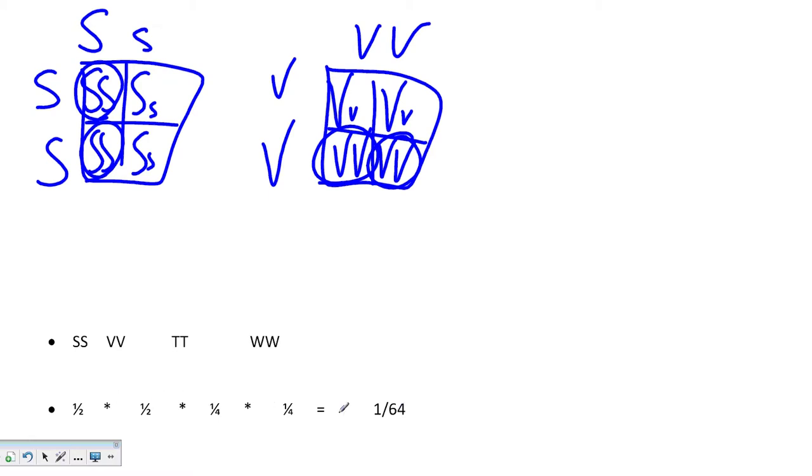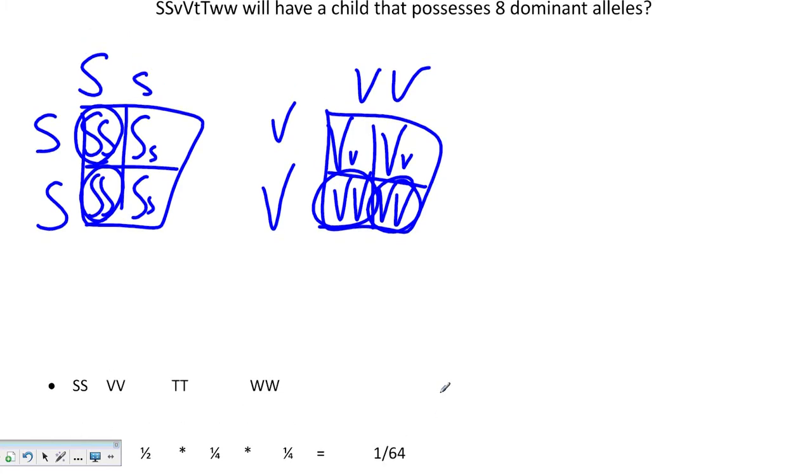Multiply all these together gives us one sixty-fourth of a chance that our offspring will have eight dominant alleles. So knowing these probabilities offhand can be really daunting, but if you run a Punnett square it takes just a couple of seconds and you'll always know that you're right.